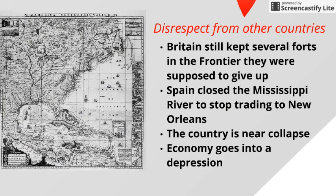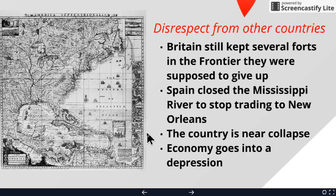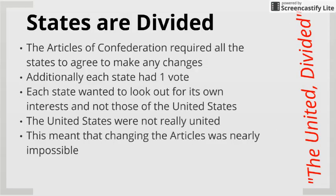We're being disrespected by a lot of other countries. For number 10, Britain was supposed to give up all this land in what we now call the Northwest Territory — places like Ohio and Michigan. Well, they didn't get rid of their forts because they realized America doesn't have an army and can't make them. Spain, meanwhile, closed the Mississippi River because we don't have a navy or army — they figured, why not? Things are really going bad. The economy goes into a depression, it's just an absolute disaster. So any logical person is going to say, let's change the Articles of Confederation.